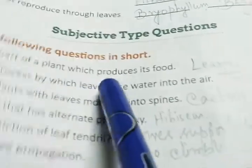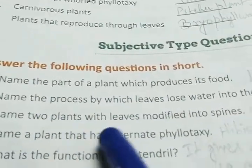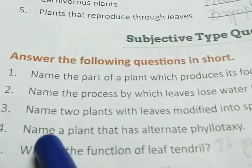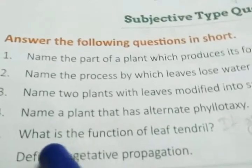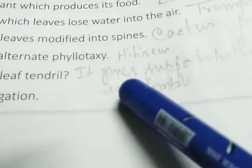Plants that reproduce through leaves — examples: bryophyllum and begonia. Next, answer the following questions in short: name the part of a plant which produces its food — leaves. Name the process by which leaves lose water into the air — transpiration. Name two plants with leaves modified into spines — cactus and prickly poppy.